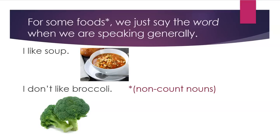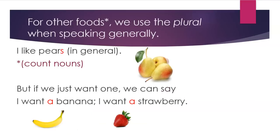For some foods — non-count nouns — we just say the word when we are speaking generally. For example: I like soup. I don't like broccoli. For other foods — count nouns — we use the plural when speaking generally. For example, I like pears, in general. But if we just want one, we can say: I want a banana. I want a strawberry.